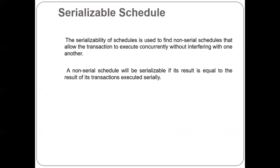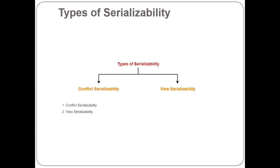What is a Serializable Schedule? Serial eligibility of schedules is used to find non-serial schedules that allow transactions to execute concurrently without interfering with one another. A non-serial schedule is serializable if its result is equal to the result of its transactions executed serially. Serializability is a classical concurrency scheme — it ensures a schedule for executing concurrent transactions is equivalent to one that executes the transactions serially in some order. It assumes all accesses to the database are done using read and write operations. A schedule is called correct if we can find a serial schedule that is equivalent to it.